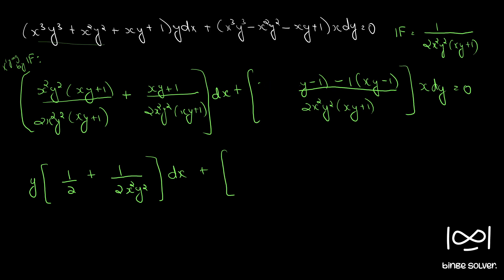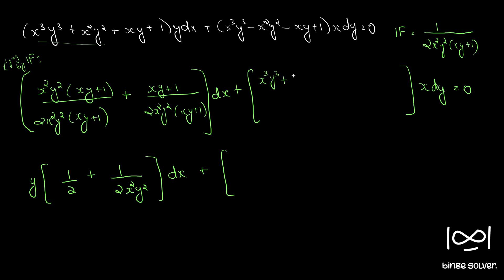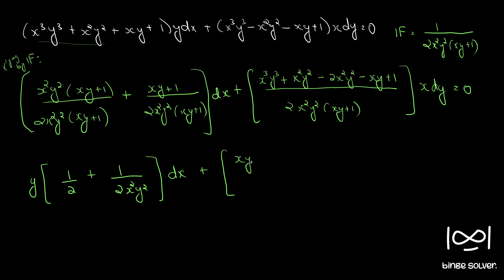We need to rewrite this part since it won't reduce directly. We need (xy + 1) as a common factor, so we rearrange: x³y³ + x²y² minus x²y² minus xy + 1. We take xy·y² common to get (xy + 1), and here if we take minus xy·y² we get minus xy common.